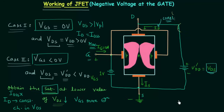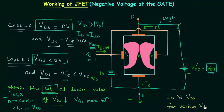So this is all for this lecture. In the next lecture we will discuss the VI characteristics of the junction field-effect transistor. That lecture is very important, and we will plot ID versus VDS for various gate-to-source voltages.